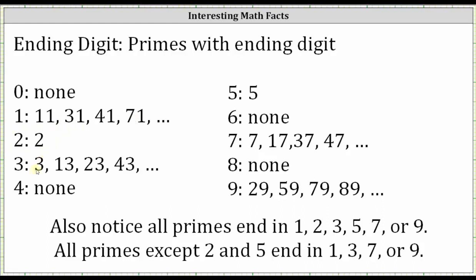There are an infinite number of primes that end in three. I've listed out the first four. No primes end in four. Only one prime ends in five, the number five.